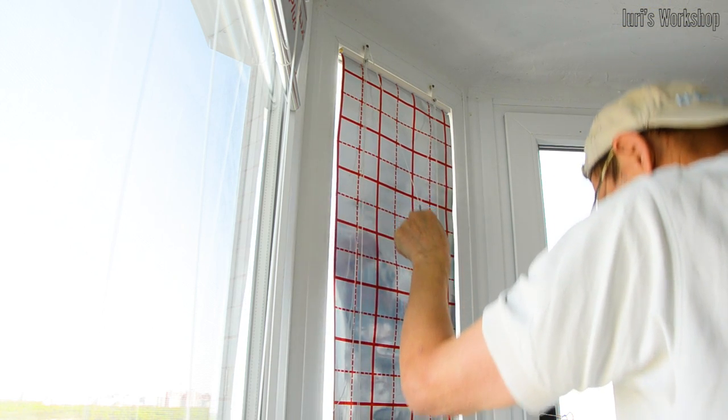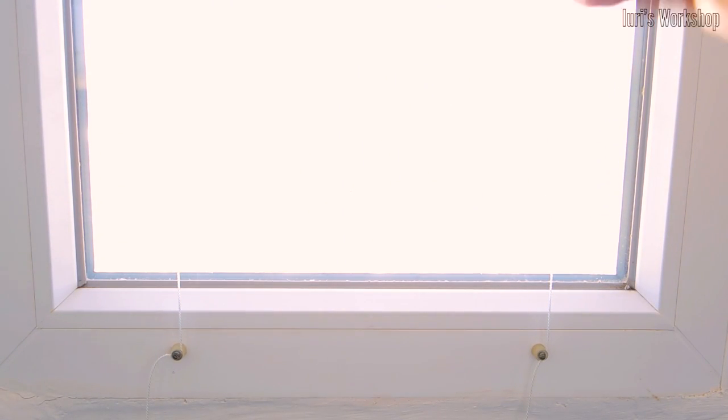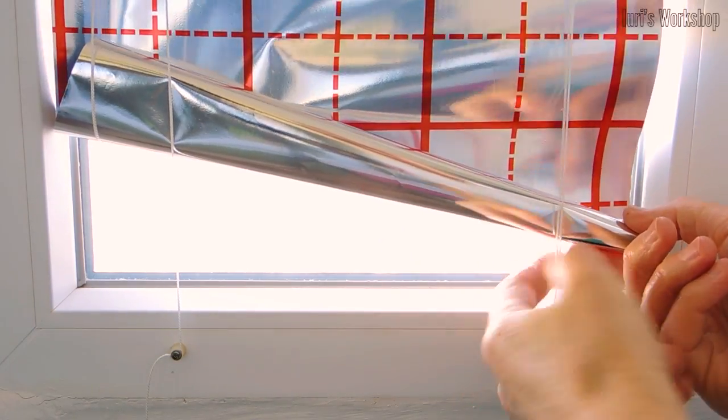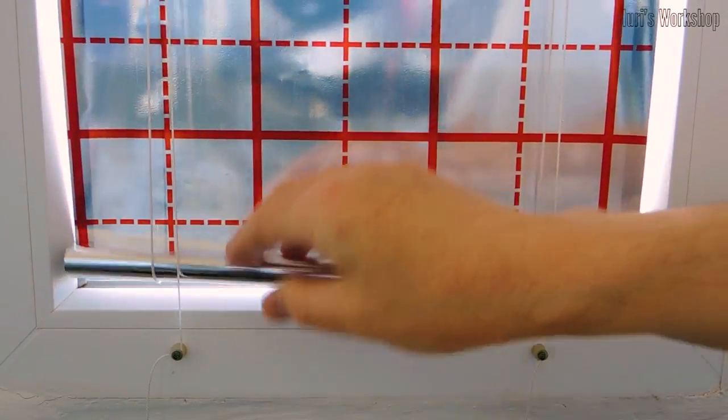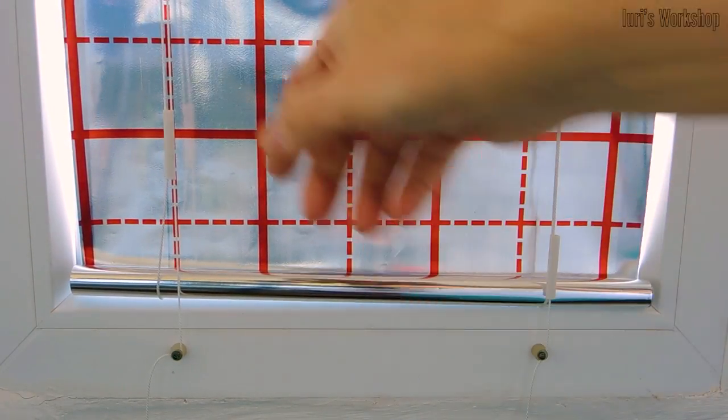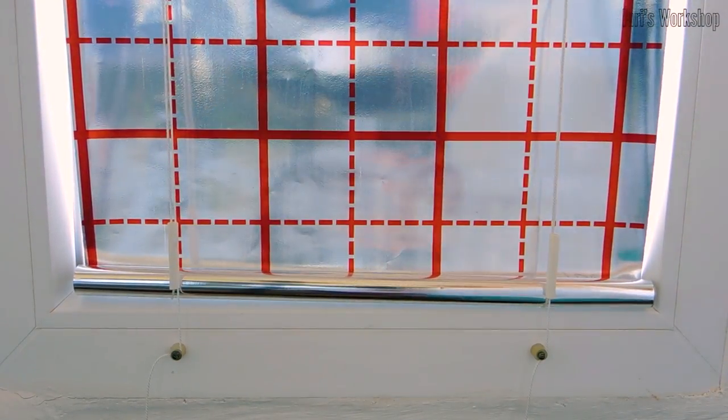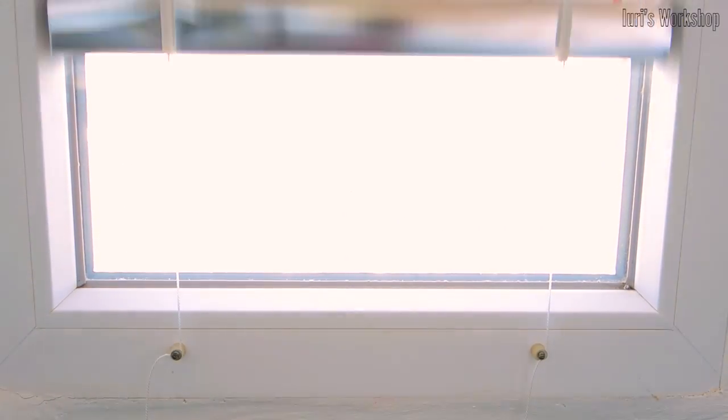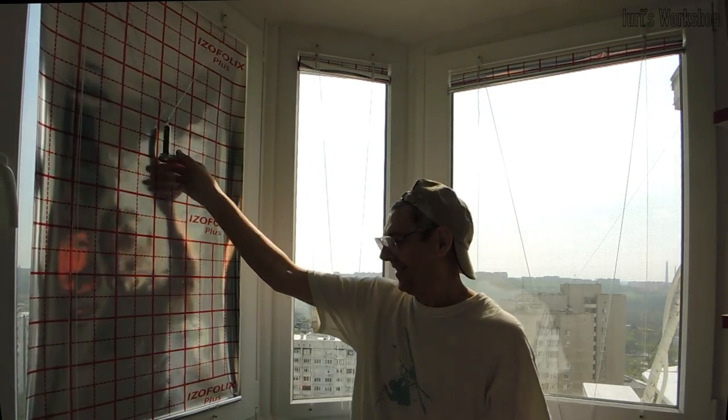If the curtain is very narrow, the movable cords can move to the side and disrupt the mechanism. Then you should thread both restrictive and movable cords through segments of fluoroplastic or polypropylene tube. That is, these tubes should slide easily over the cords. This will solve the problem of narrow roller blinds. That's how it works.